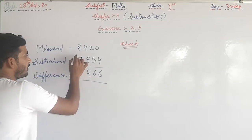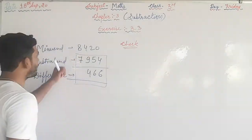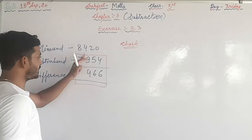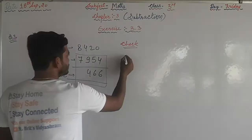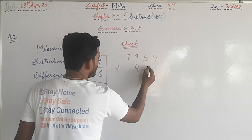We have to add these two numbers. If you get minuend as our result, then your answer will be right. 7954 plus 466.